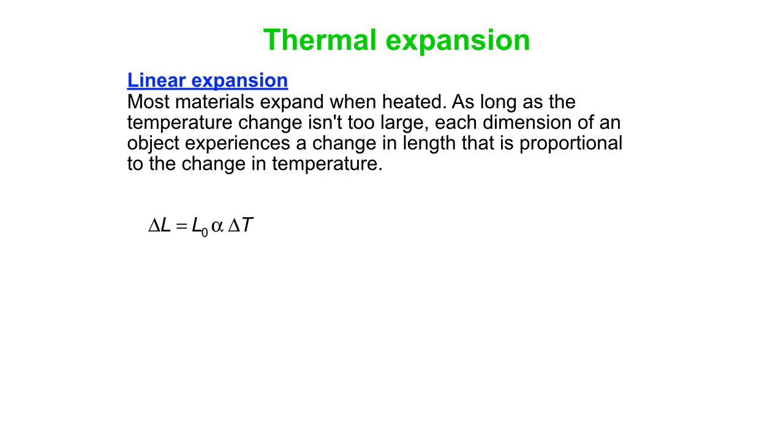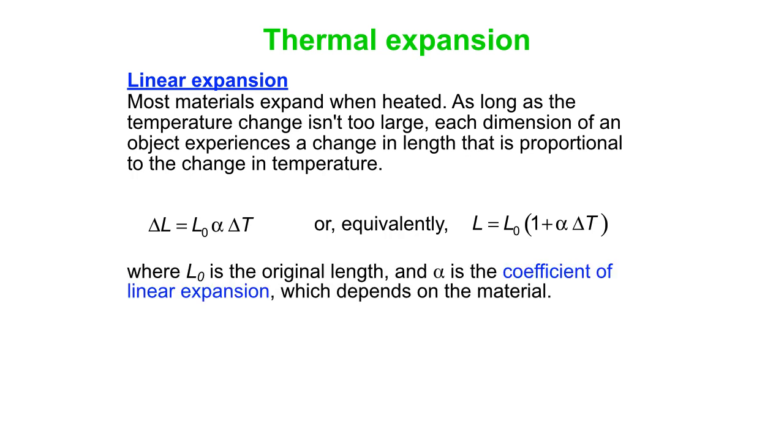We can say the change in length is the original length L0 times some constant alpha times delta T. Or in an equivalent way, we can say the new length is the old length multiplied by 1 plus alpha delta T. So L0 again is the original length and alpha is called the coefficient of linear expansion. And that's a number that just depends on the material.